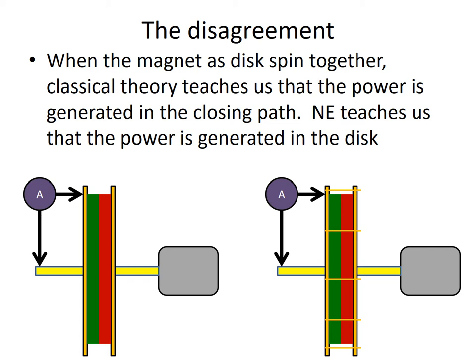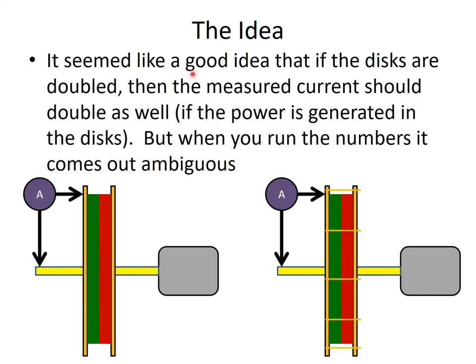What we propose is that in order to prove this idea, if we were able to double the number of discs and connect them together, that would prove one case or the other. Connecting these two discs should not affect the closing path, so if the energy is developed in the closing path then classical theory would be right. On the other hand, if you connect two discs together and get double the current, that would prove that the energy is developed in the disc. The problem is when you actually run the numbers the value comes out to be ambiguous.